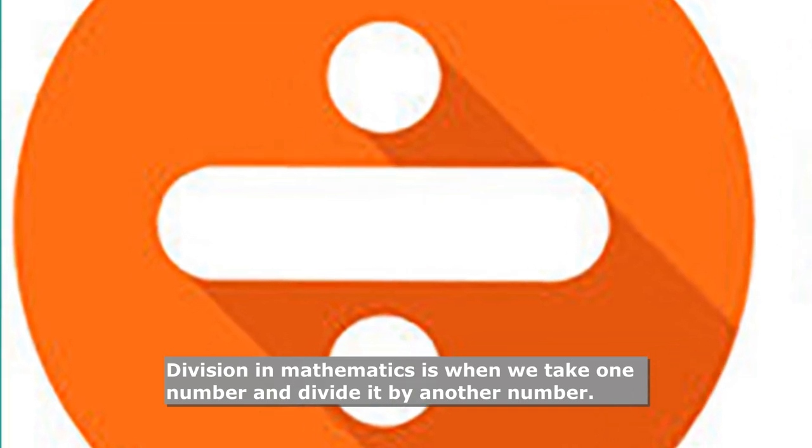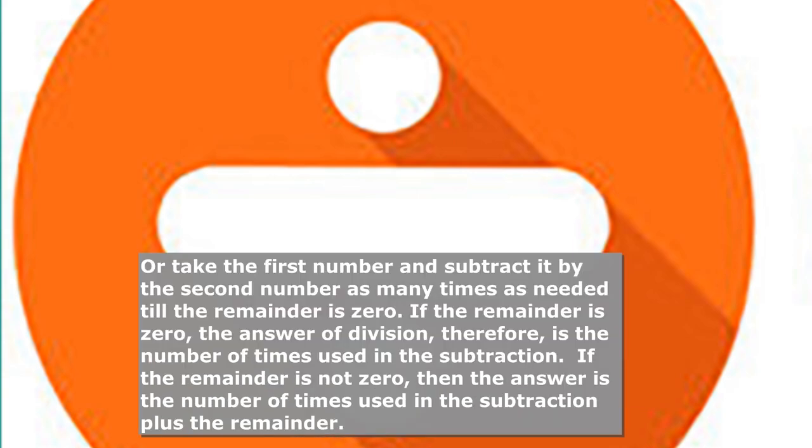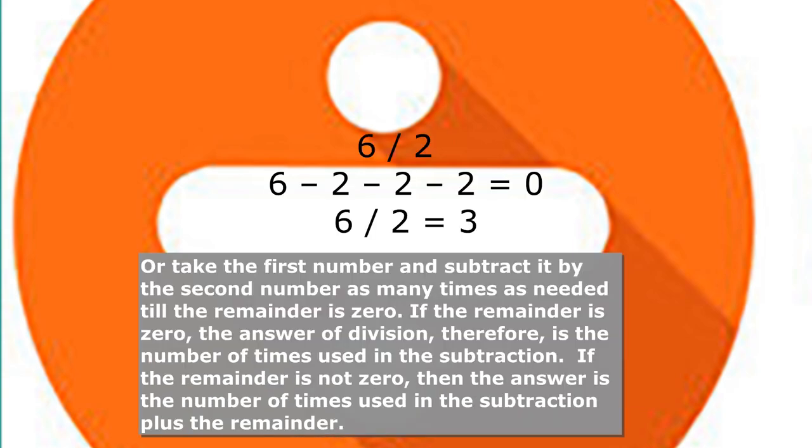Division in mathematics is when we take one number and divide it by another number, or take the first number and subtract it by the second number as many times as needed, till the remainder is zero. If the remainder is zero, the answer of division is the number of times used in the subtraction.